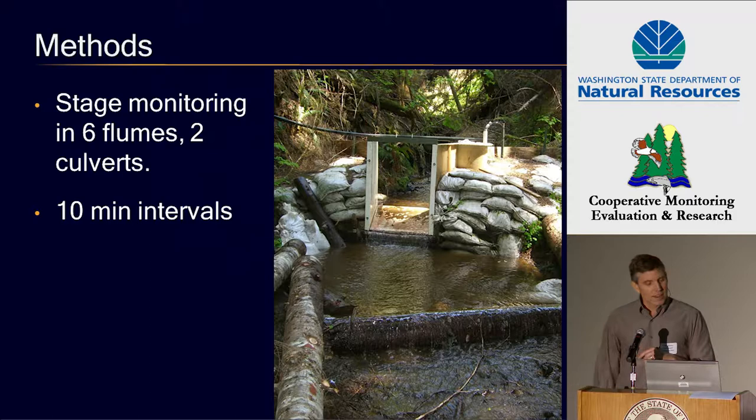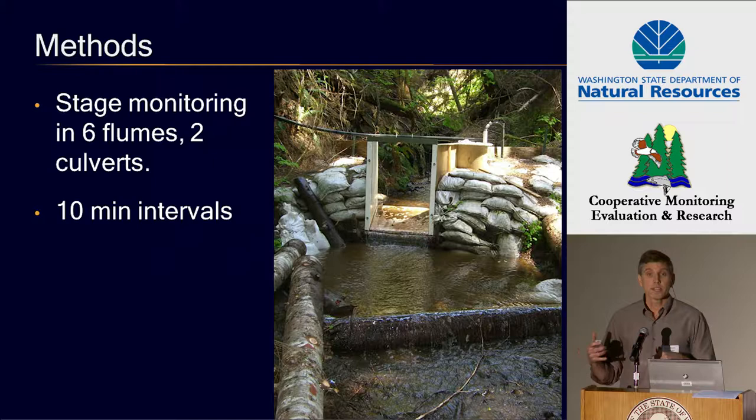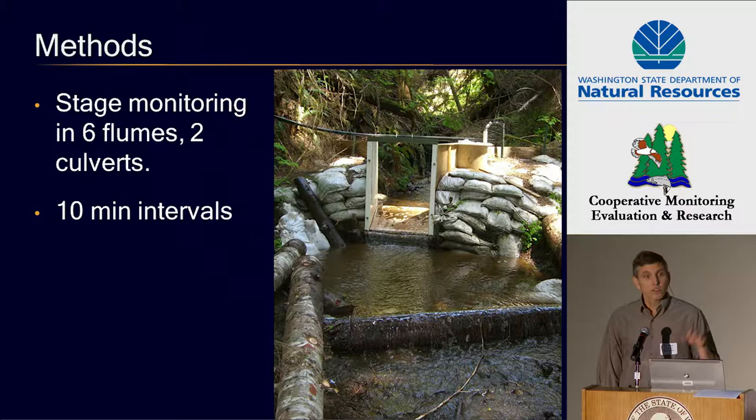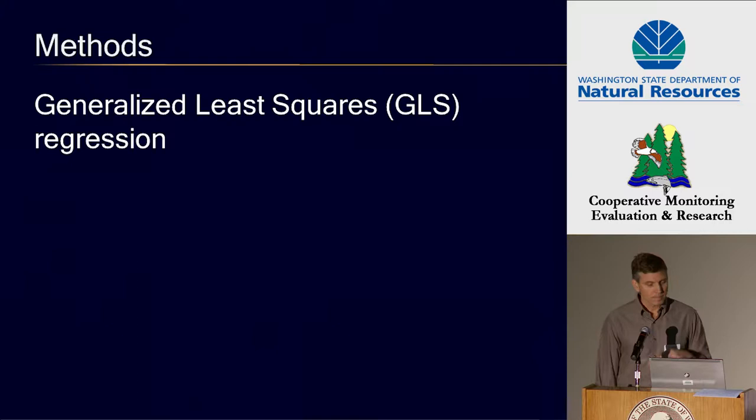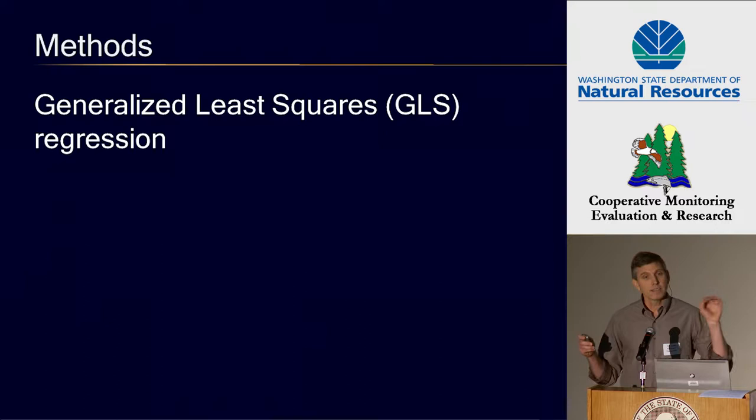Bill installed flumes out in six of the basins. Two of the basins didn't have good flume sites, so he put out stage recorders associated with culverts and then developed his own stage-discharge relationship for those basins. The flumes have built-in stage-discharge relationships. The stage data was collected at 10-minute intervals, turned into discharge, and then I averaged those up to daily values for what I'm going to present. As Bill mentioned, we use generalized least squares to deal with the lack of independence in the time series.